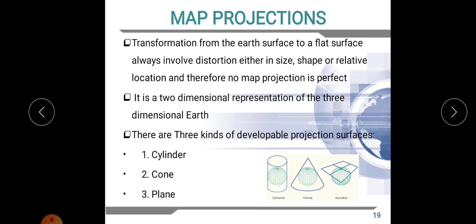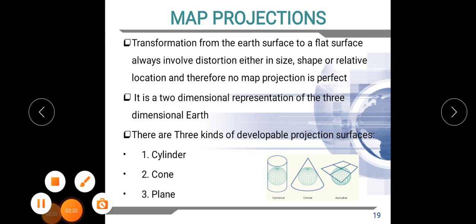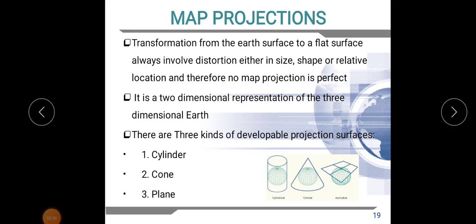There are three kinds of developable projection surfaces. We can project the globe into three kinds of developable projection surfaces: cylinder, cone, and plane. When projecting our globe into a cylinder, we first place our globe into the cylinder, then transform all the features of the earth onto the cylinder, then unwrap the cylinder. So the three-dimensional globe is projected into a two-dimensional cylindrical surface.